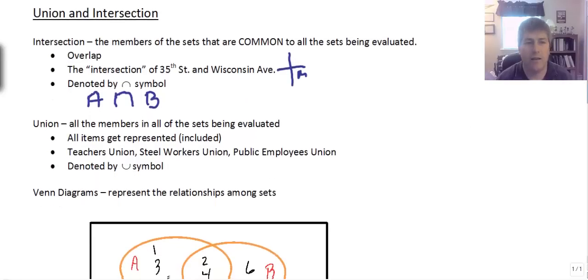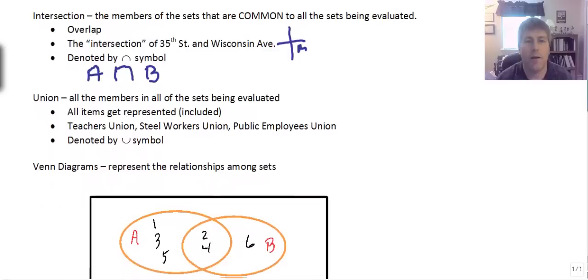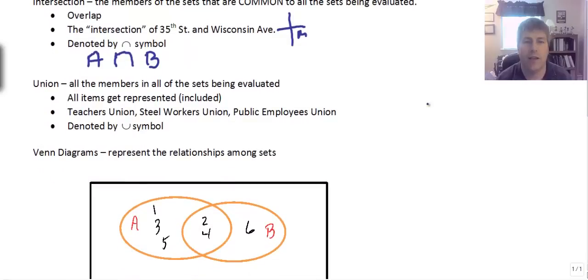Union, on the other hand, is all the members in all of the sets being evaluated. So in union, everything gets represented. All the items get represented or included.